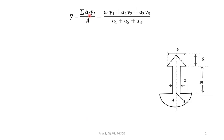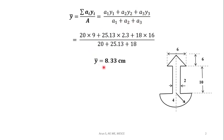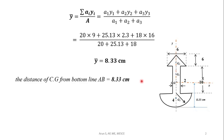Using the standard formula: ȳ = ΣAiyi / ΣAi = (A1·y1 + A2·y2 + A3·y3) / (A1 + A2 + A3). Substituting the corresponding values, we get ȳ = 8.33 cm. So the distance of the centroid CG from the bottom line AB is 8.33 cm.